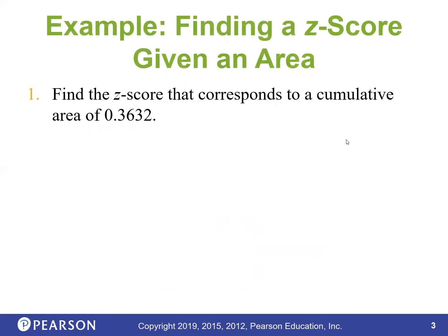Problem 1: Find the Z-score that corresponds to a cumulative area of 0.3632. Cumulative area means the left-side area up to that value. Since 0.3632 is less than 0.5 (halfway), the Z-score will be negative — it's to the left of center. By table, find 0.3632 in the negative Z-score table. The answer is approximately negative 0.35.